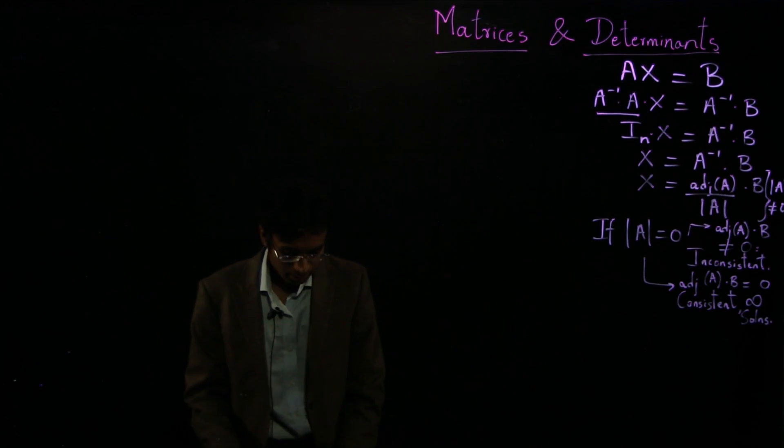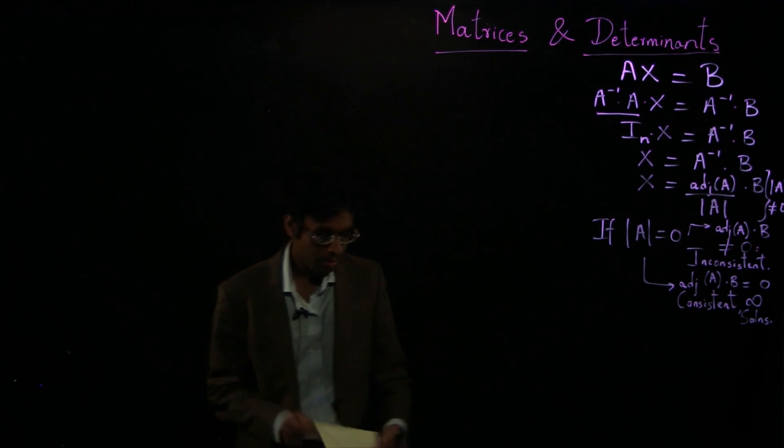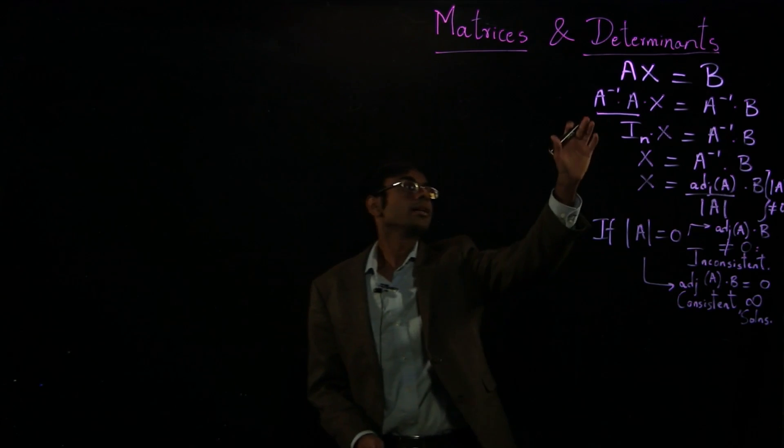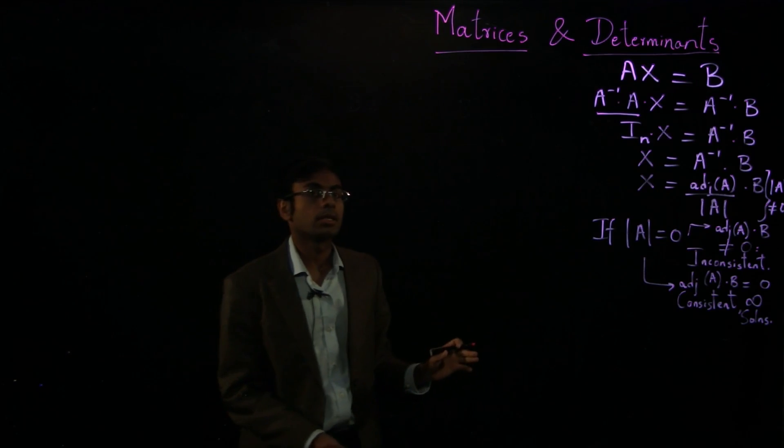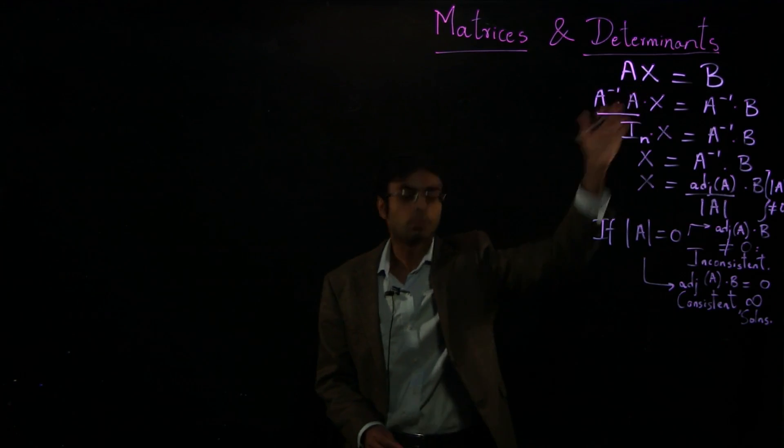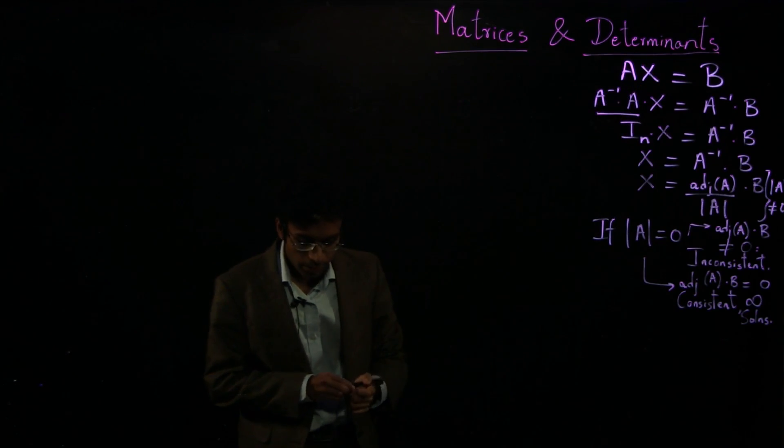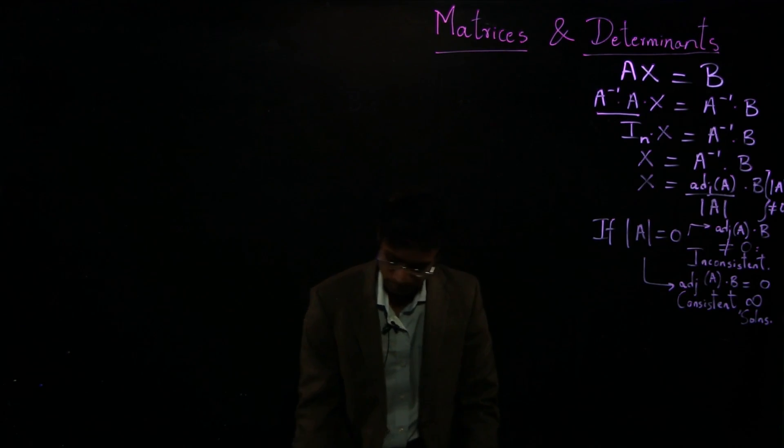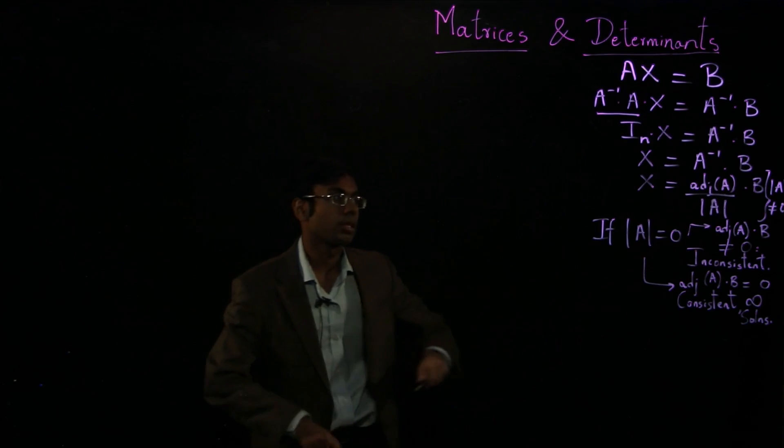So this is one way using matrix operations to solve a system of simultaneous linear equations. A second way is using determinants, or what is known as Cramer's rule.